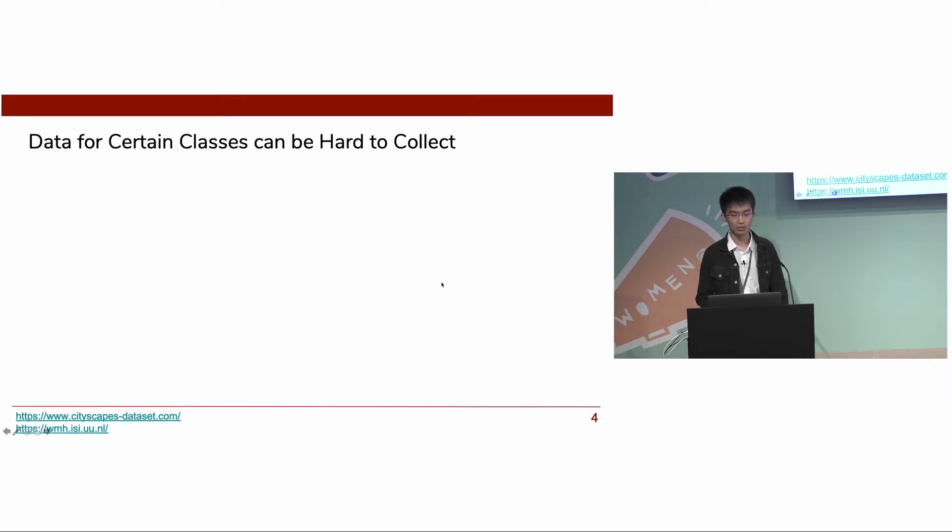Someone working with relatively smaller datasets might argue that one can always collect a uniform data training set to avoid the imbalance issue. However, in the real world, data for certain classes can be hard to collect.